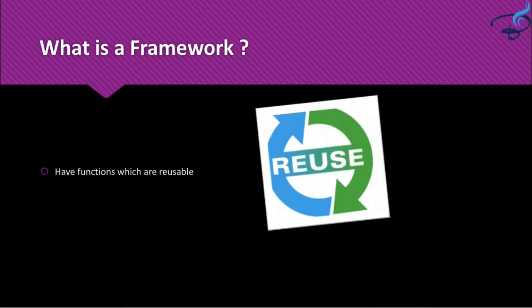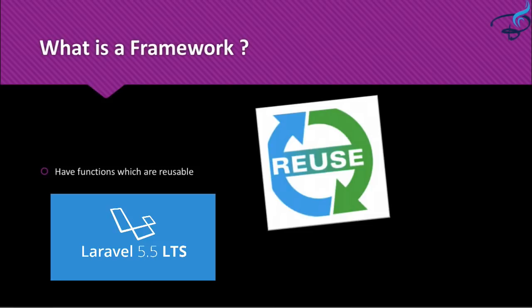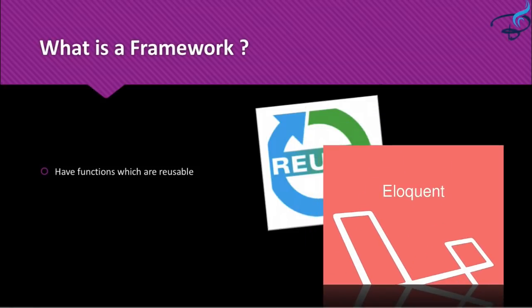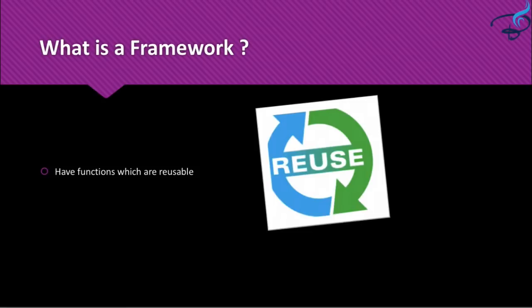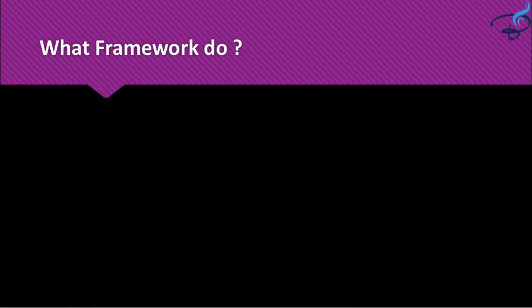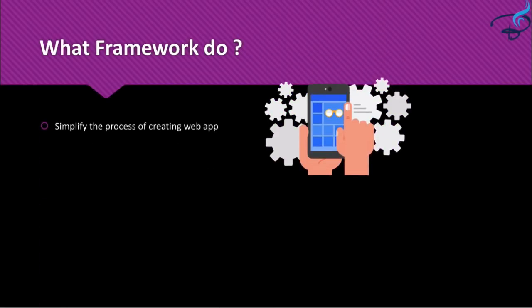The functions defined in a framework are reusable. If you want to use the same functionality in multiple places inside your project, you can — you don't have to create those functions yourself. For example, with Laravel's Eloquent models, Eloquent provides you functions you can use anywhere in your project. You don't have to write functionality to get data from the database; you just call that function without writing anything from scratch.